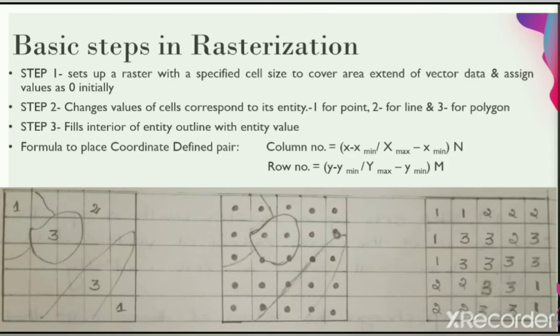In a rasterization process, we need to use a formula to place a coordinate defined pair in a raster. To find the coordinate defined pair in a column, we use the formula (x - x_min) / (x_max - x_min) × N, where N will be the total number of columns in that raster grid.